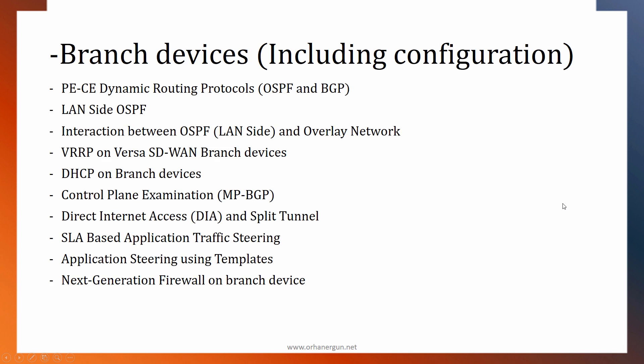Then the rich part is the branch devices section. It covers the configuration for different technologies, including configuring PE to CE — provider edge to customer edge — dynamic routing protocols such as OSPF and BGP on the branch device. This covers how we can have OSPF in the LAN side, get routes from the LAN side, advertise them to the overlay and to other branches, as well as getting routes from the overlay and advertising them back to the local area network side.